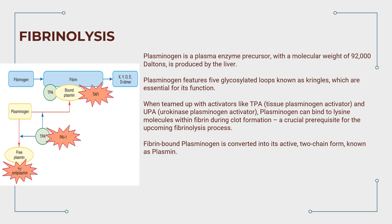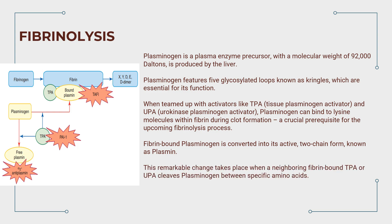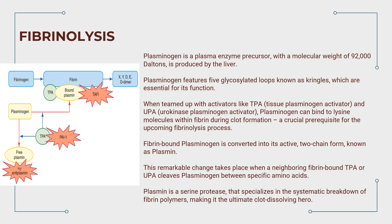Fibrin-bound plasminogen is converted into its active two-chain form known as plasmin. This remarkable change takes place when a neighboring fibrin-bound TPA or UPA cleaves plasminogen between specific amino acids. Plasmin, a serine protease, specializes in the systematic breakdown of fibrin polymers, making it the ultimate clot-dissolving enzyme.